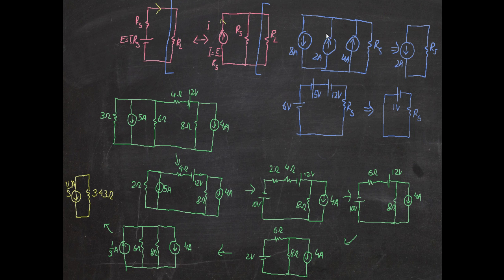When they point in opposite directions, you subtract. Since this one is downward and these sum to six pointing upward, eight minus six equals two. Eight is bigger, so the final direction points downward. Similarly, for voltage sources, six plus five is eleven pointing one way, and twelve volts points the opposite way, so twelve minus eleven equals one volt. The final direction follows the twelve-volt source since it is the larger value.